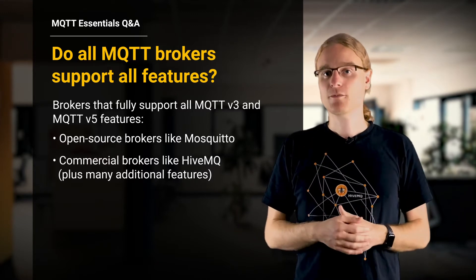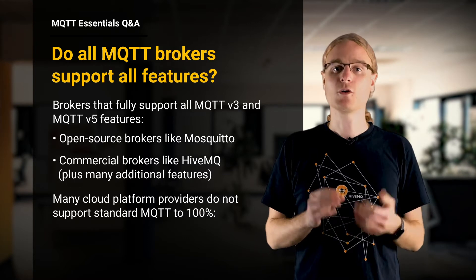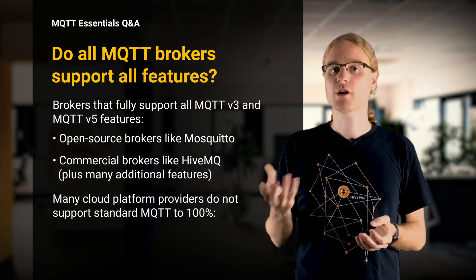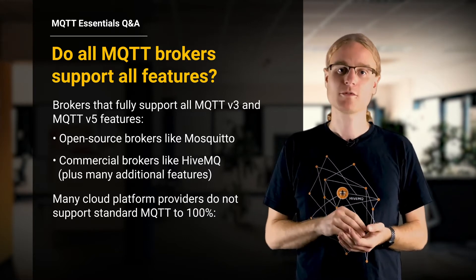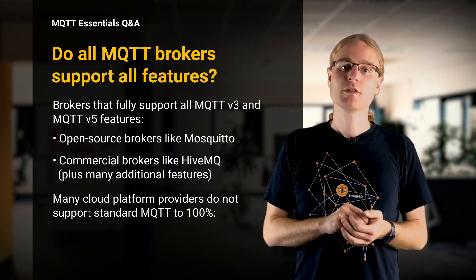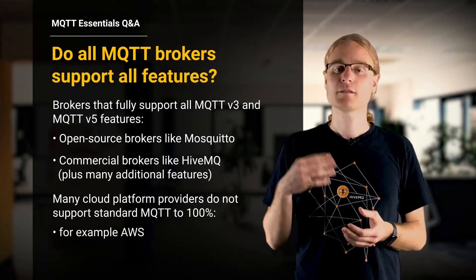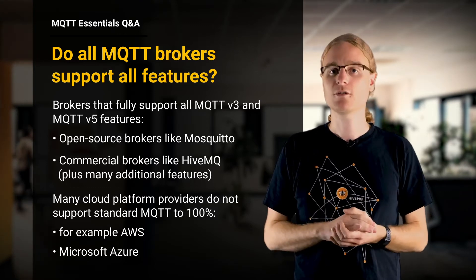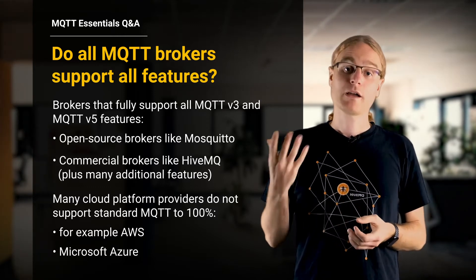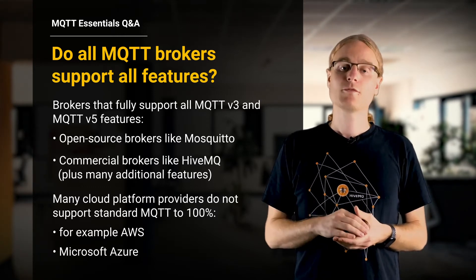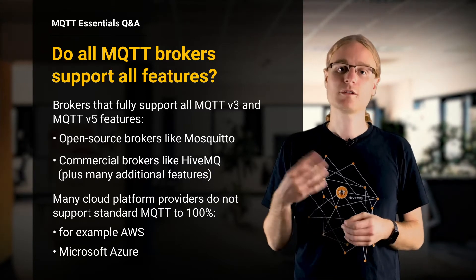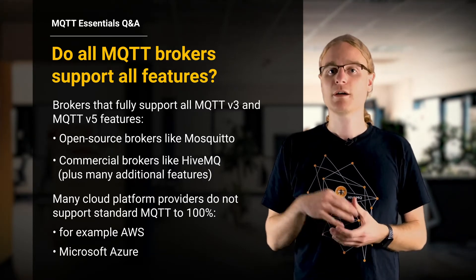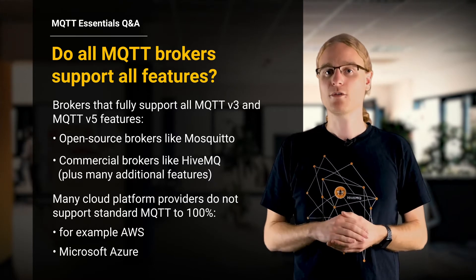Many of the cloud platform providers won't let you do standard MQTT, but have their own proprietary version of MQTT. For example, AWS and Microsoft Azure with their respective IoT offerings — IoT Hub for Microsoft Azure or IoT Core with AWS — do not support MQTT with all features.